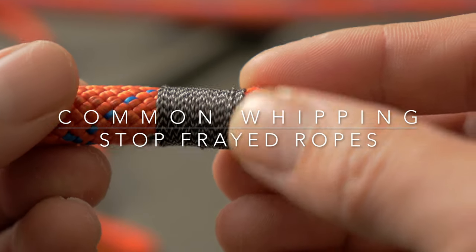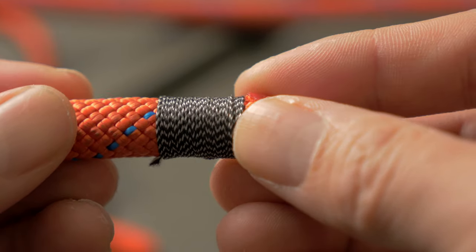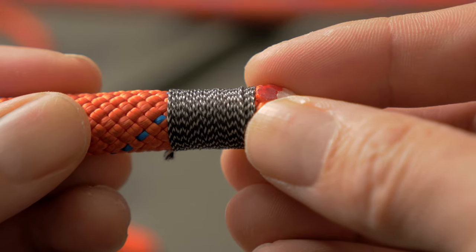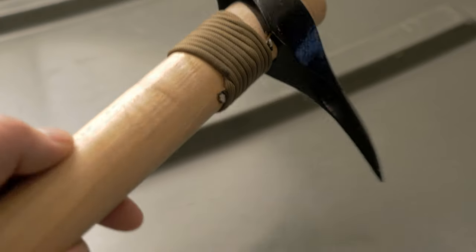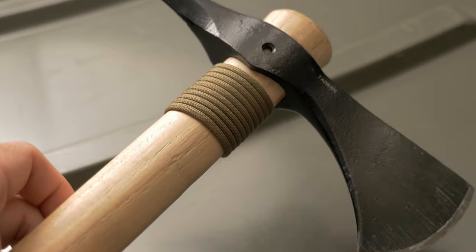In this video we're going to go over the common whipping. Whipping was primarily used to finish the ends of ropes to make sure they don't fray, but it can also be used to give tools an enhanced grip or to enhance its look and give it a personalized feel.